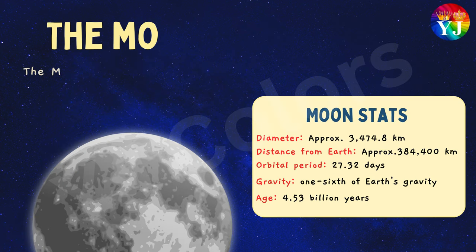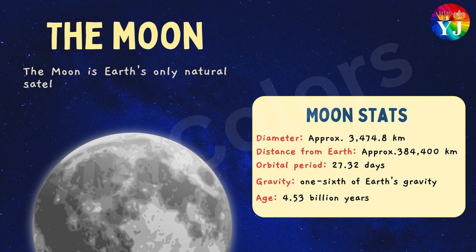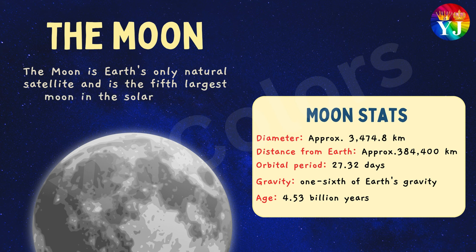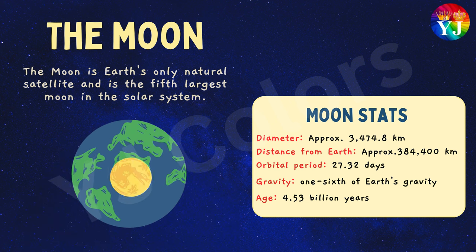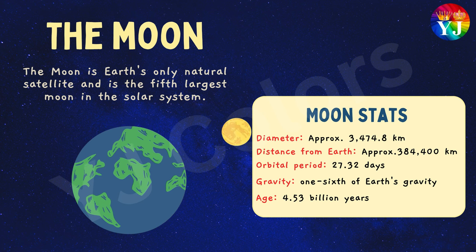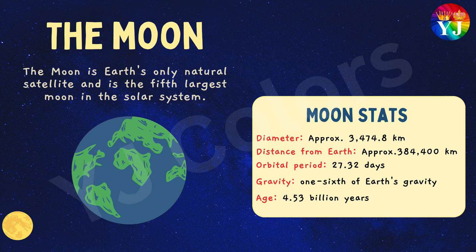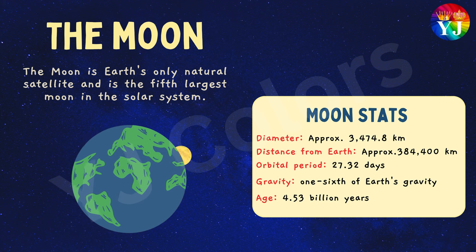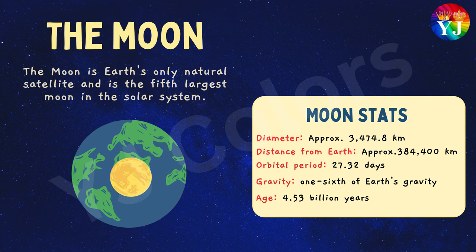The Moon is Earth's only natural satellite and is the fifth-largest moon in the solar system. Statistics of the Moon: Diameter approximately 3,474.8 km; Distance from Earth approximately 384,400 km; Orbital Period 27.32 days; Gravity one-sixth of Earth's gravity; Age 4.53 billion years.